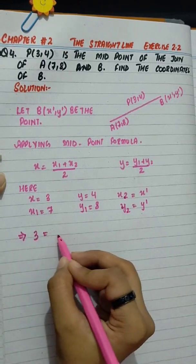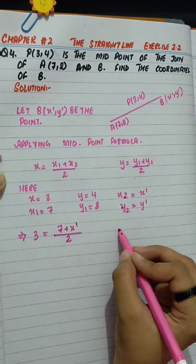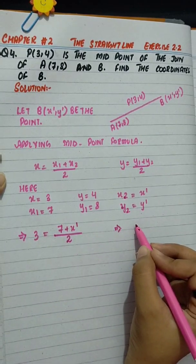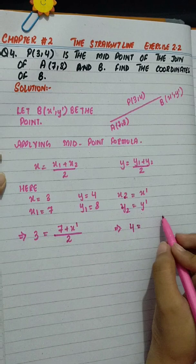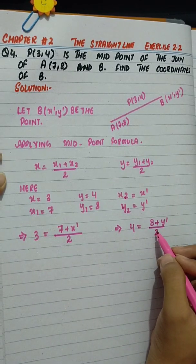So here 3 equals 7 plus x' divided by 2. 4 equals 8 plus y' divided by 2.